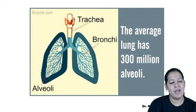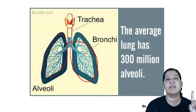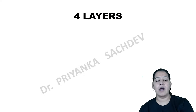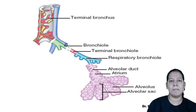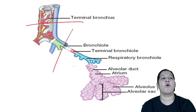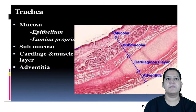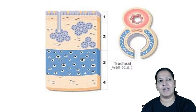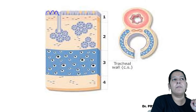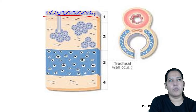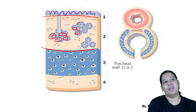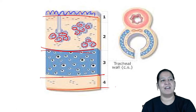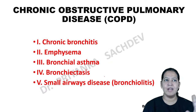Each lung contains approximately 300 million acini. There are four layers of the trachea: mucosa, submucosa, muscularis propria, and serosa. The mucosa is lined by pseudostratified ciliated columnar epithelium. The submucosa contains glands that perform secretion — important to understand for asthma. The muscularis propria contains cartilage, and then there is the serosa.